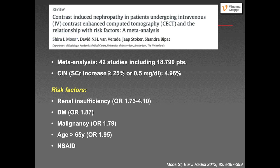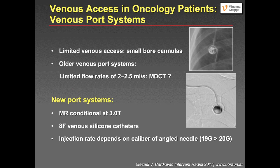Basically, we know that patients with cancer are quite vulnerable to this problem. A second important issue is that many oncology patients do not have good veins, so we have to use very small bore IV cannulas. With older port systems, you can often only achieve a limited flow rate of 2 to 2.5 mL/sec, which is a problem for a good contrast-enhanced CT study.